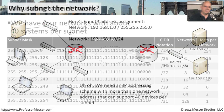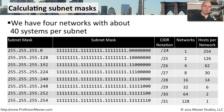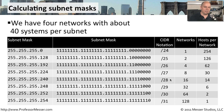One easy way to make a decision here is to write out every single one of our options. We've been given a /24, which gives us one network with 254 hosts — but we need at least four networks with about 40 systems per subnet. If we perform the same calculation on each mask — /25, /26, /27, /28, and so on — we can calculate how many networks that would create and how many hosts per network. Our magic number is 40 systems per subnet.